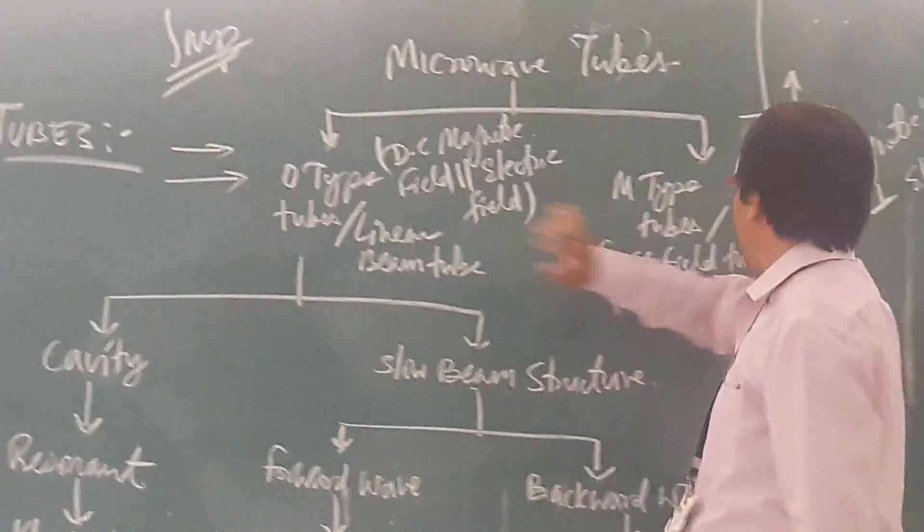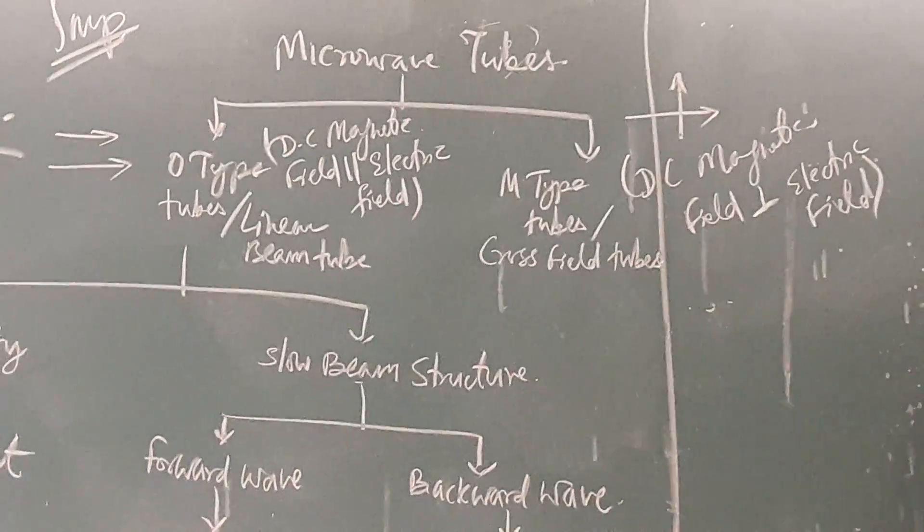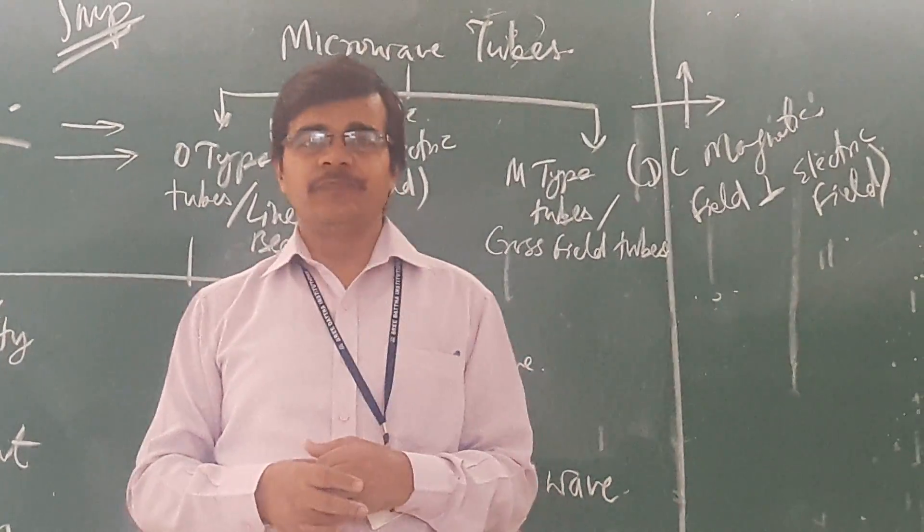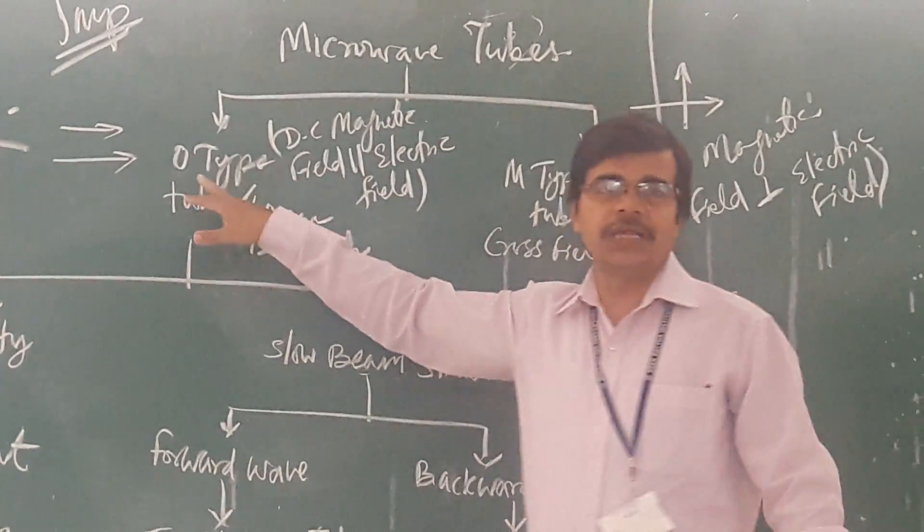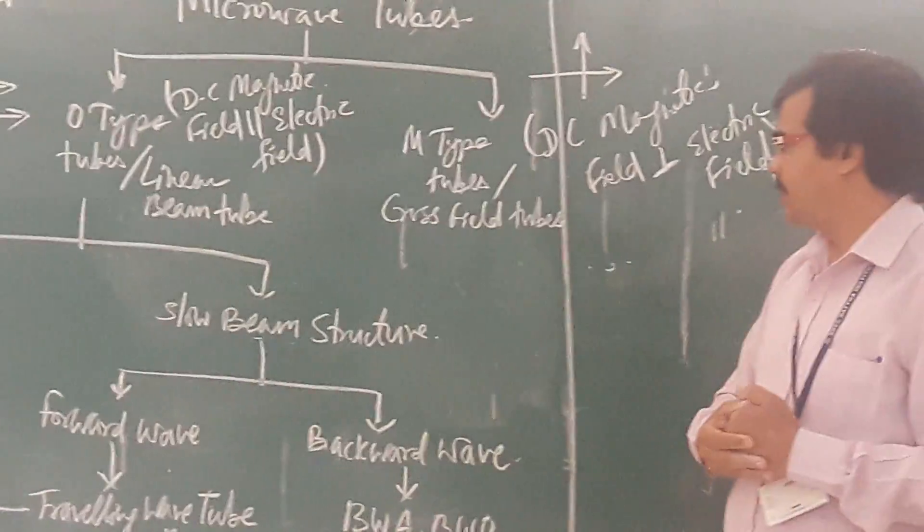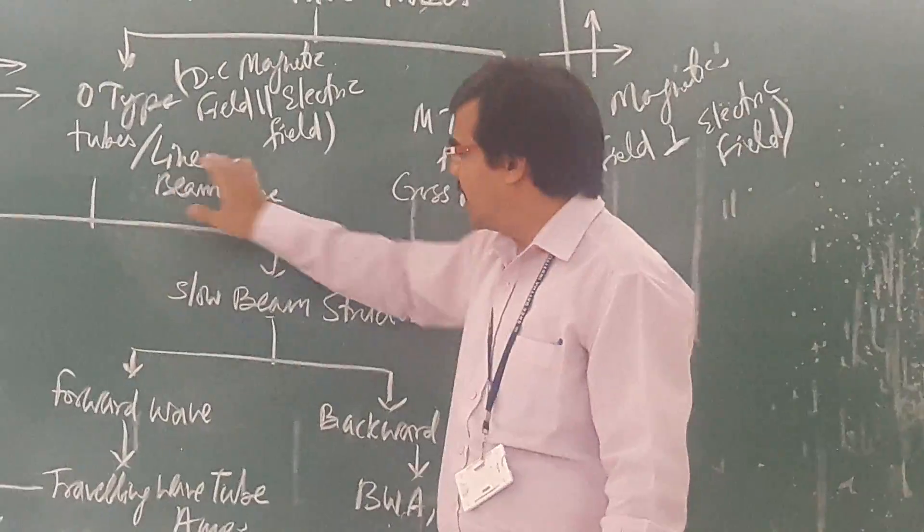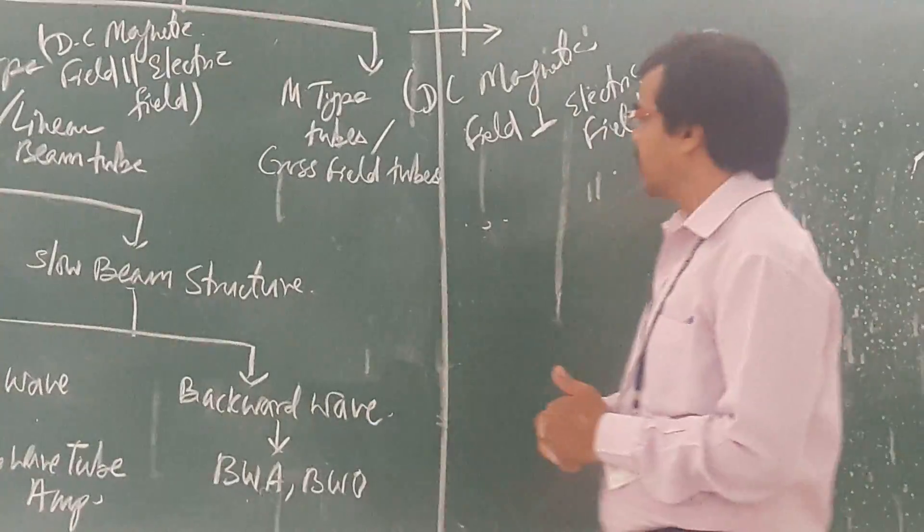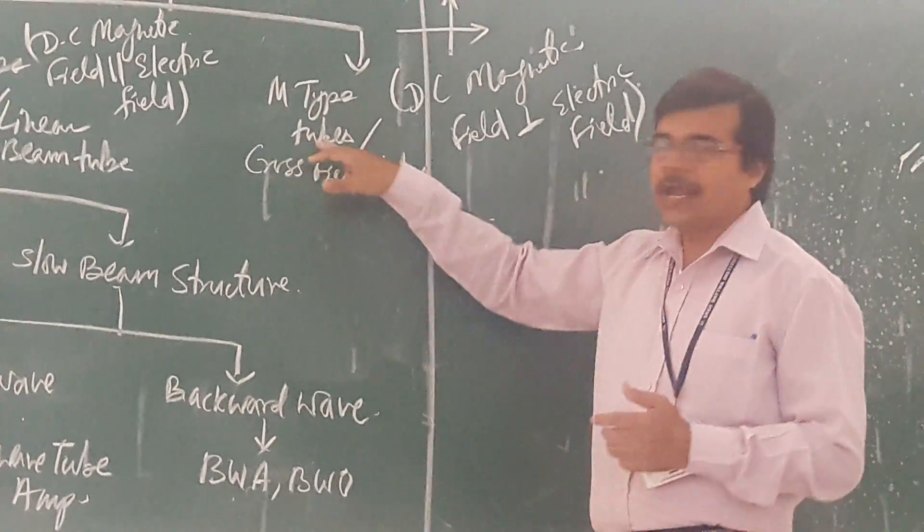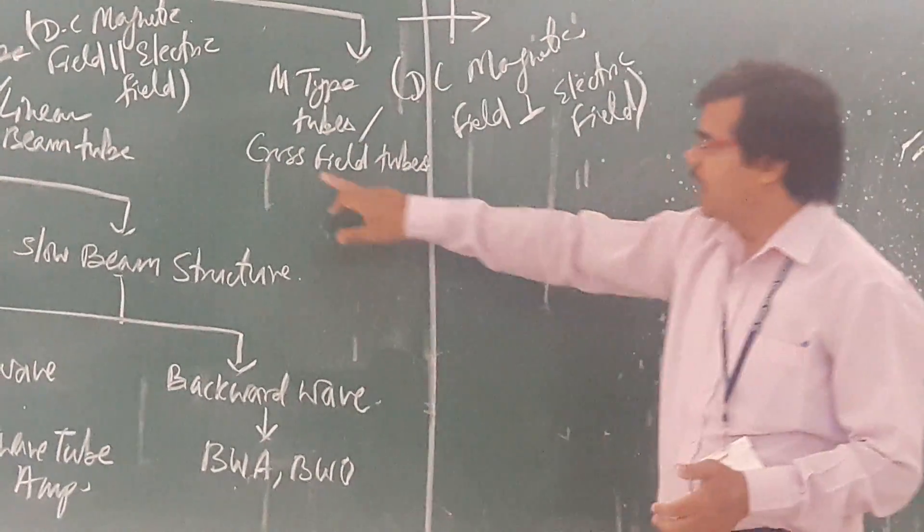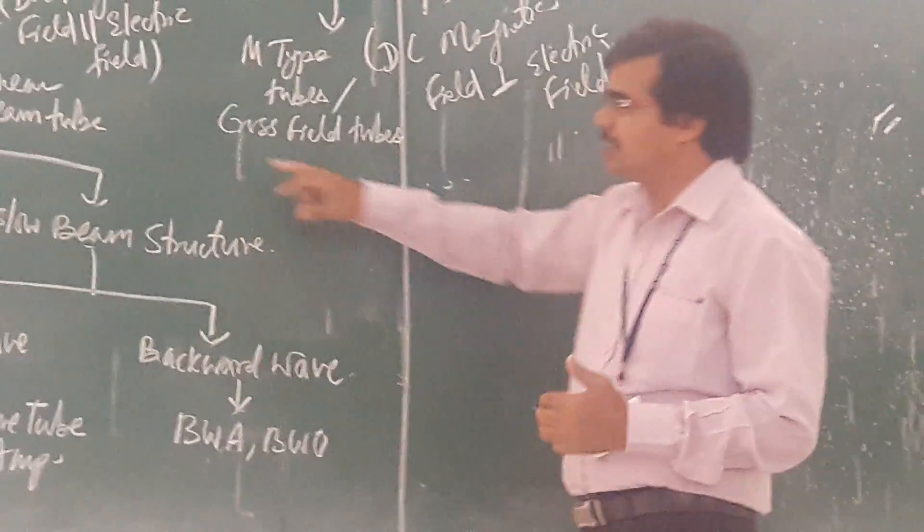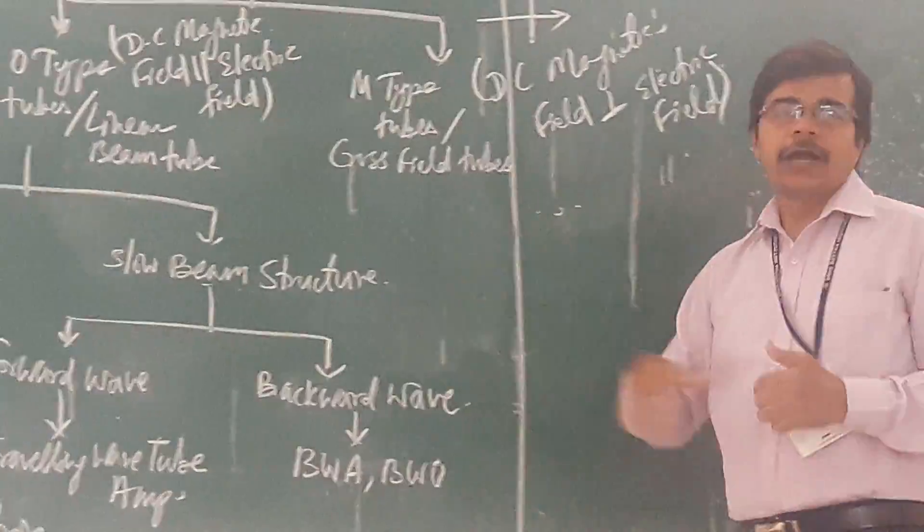First one is your O type tube and second one is your M type tube. O type means O stands for original. It is original type. It is also called your linear beam tube. This is also called your linear beam. On the other hand, your M type tube, it is also known as cross field tube. So, this is linear beam and this is cross field.